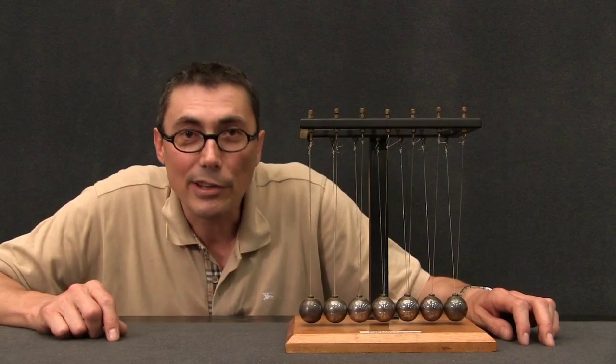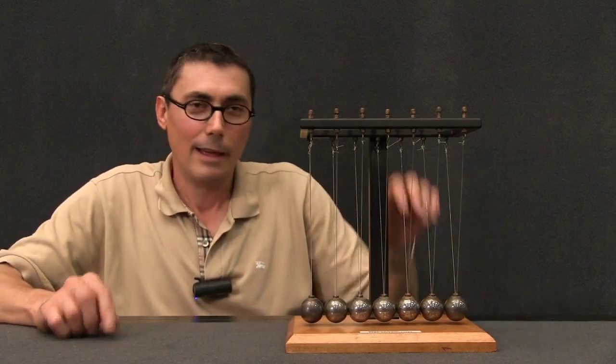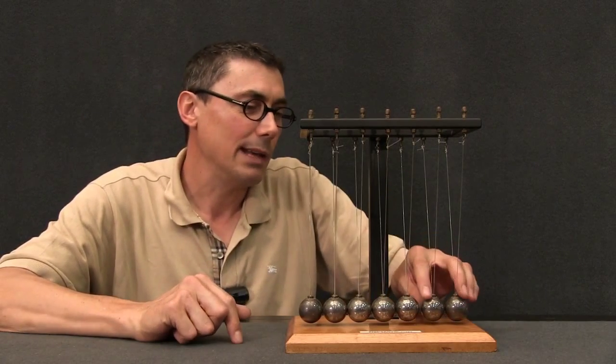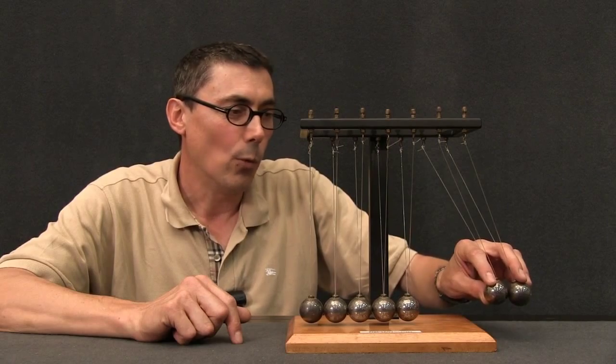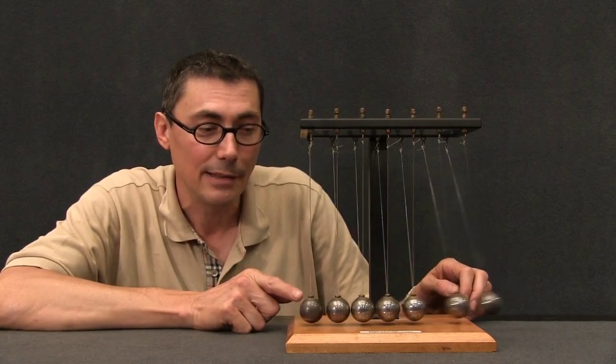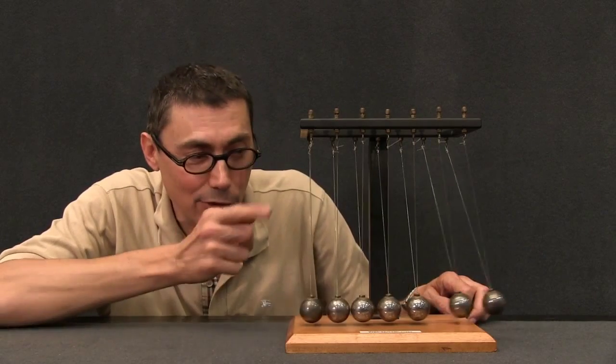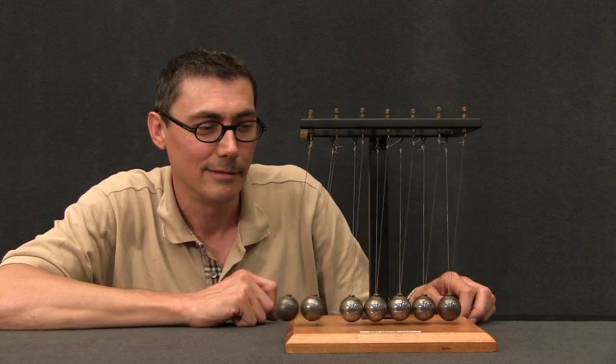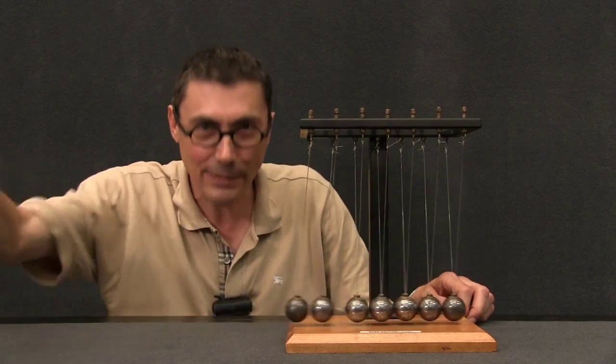Now, here's a little exercise for the viewers at home. Using my little rule of thumb, see if you can explain why when I drop two balls, I get two balls off at the end. If you can manage that, then try it for three, four, five, etc. Well go on, what are you waiting for? Go and start thinking about it.